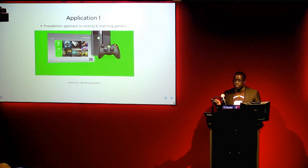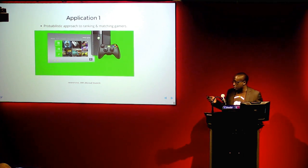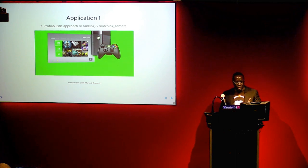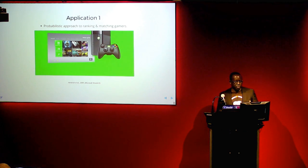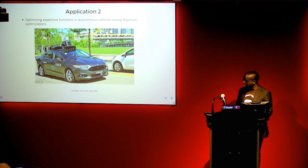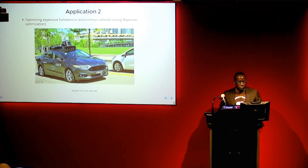They used a probabilistic approach for the Xbox 360 to match players based on their quality, so players of equal ability can play against each other and enjoy the experience. This is published in a paper you can read later, and it has been running since around 2009, with millions of players being matched using this probabilistic framework.